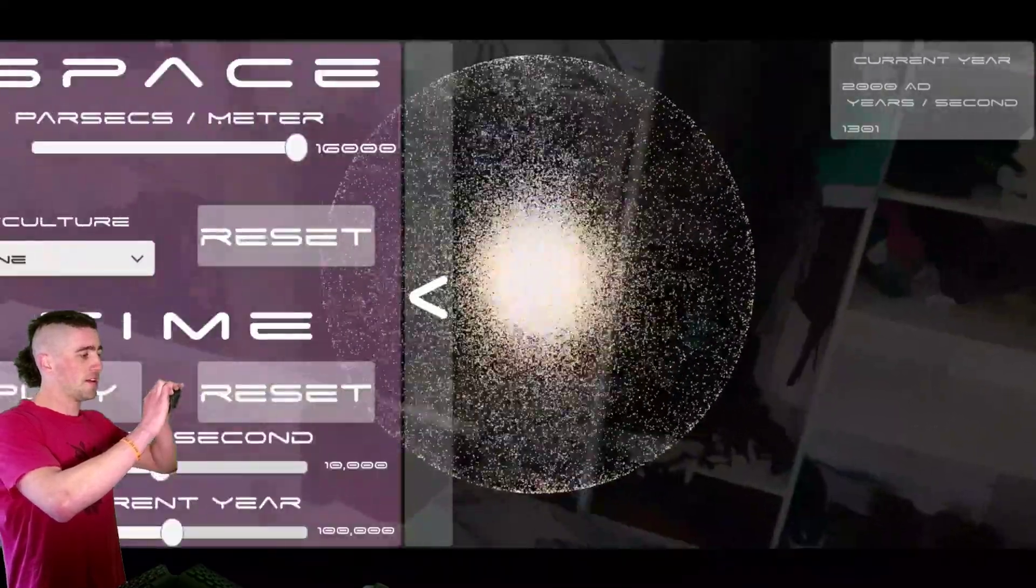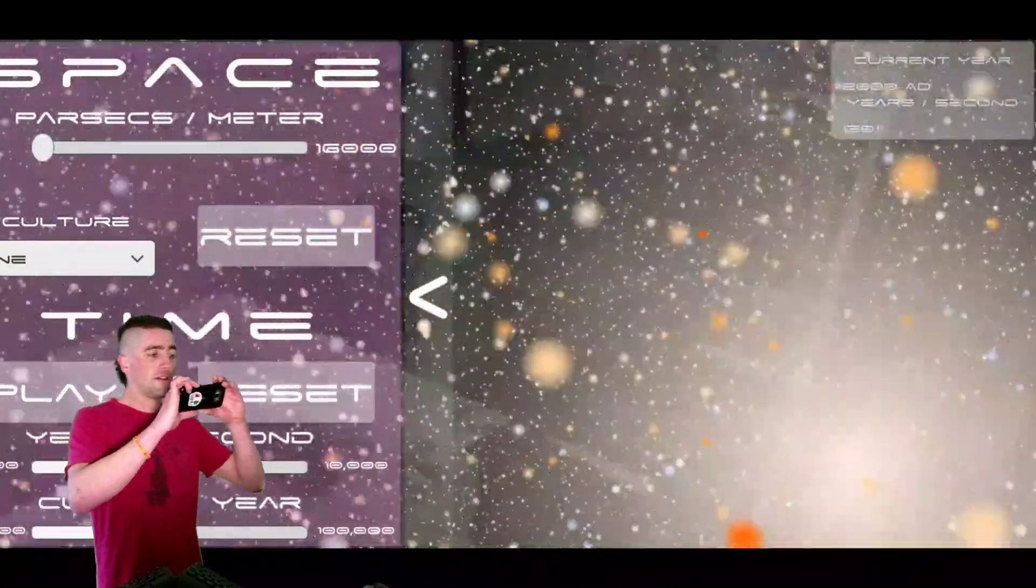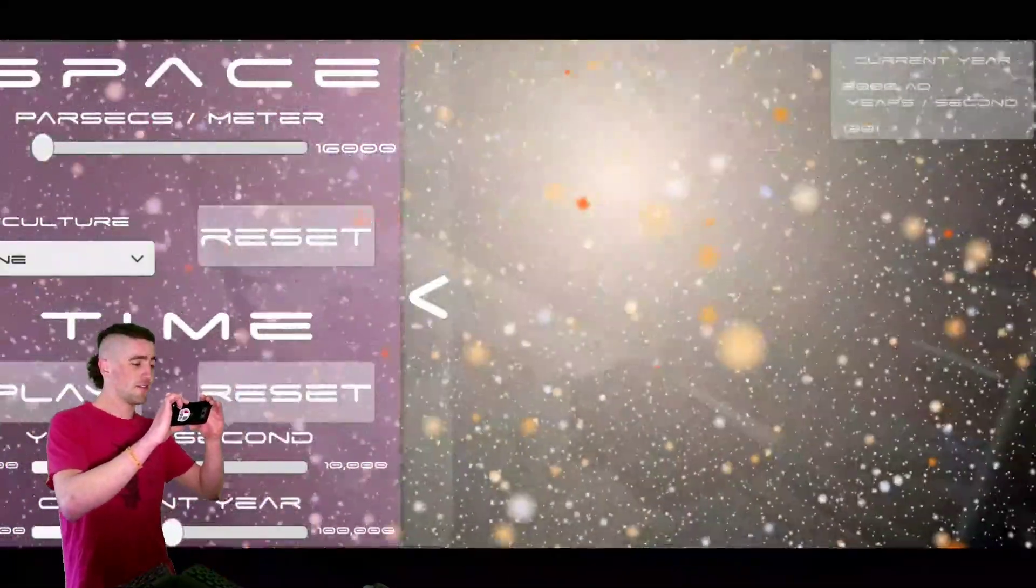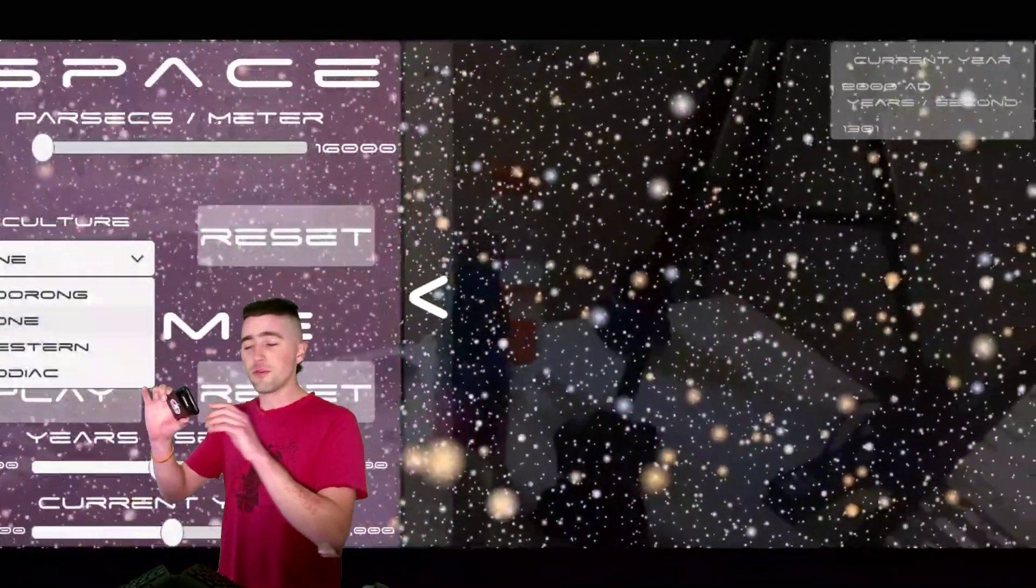Okay, I'm going to go ahead and scale it back, scale it back down. It's one parsec per meter again. And here we have the sun at the origin. And now I'm going to show you a few more constellations.